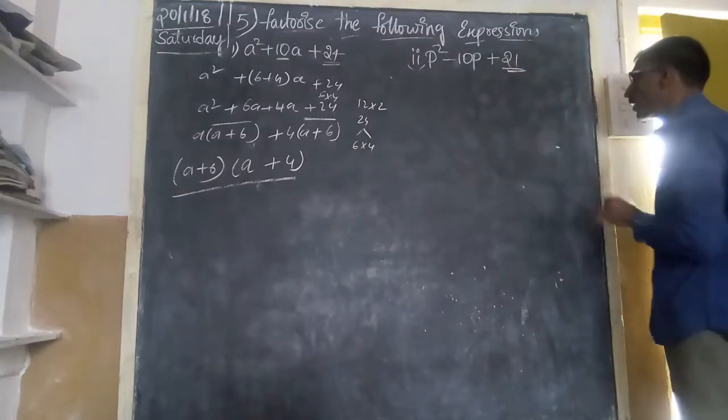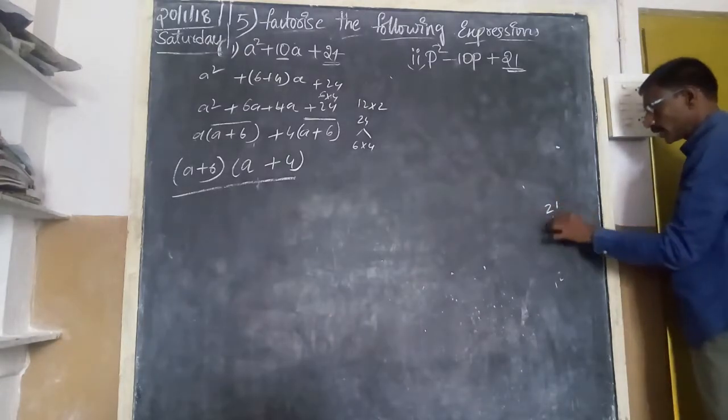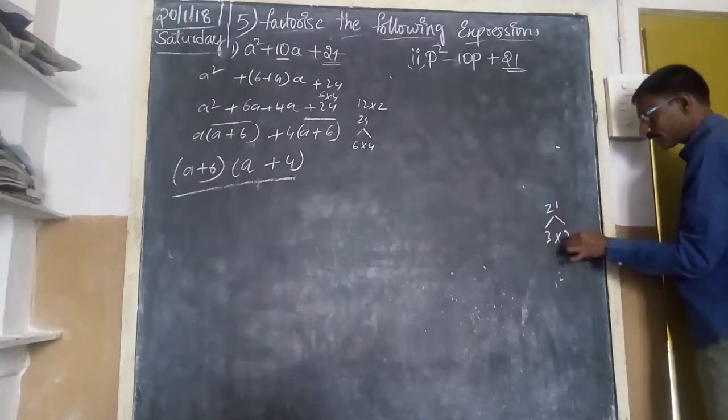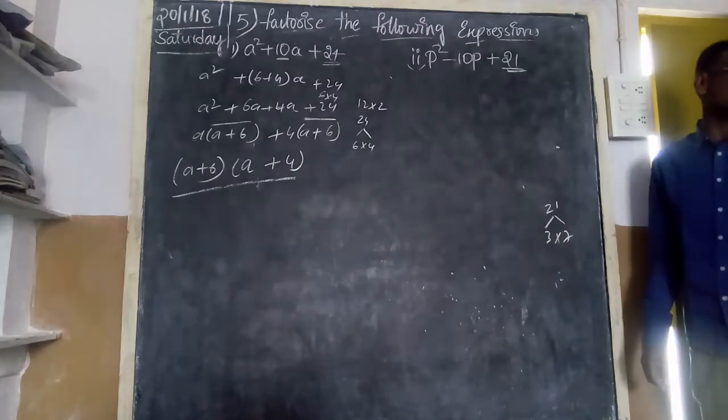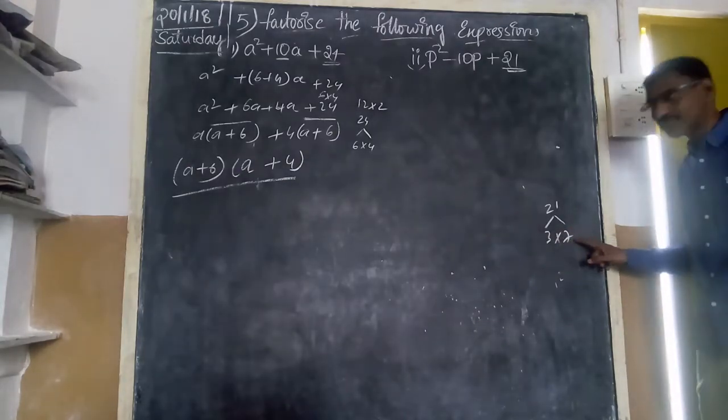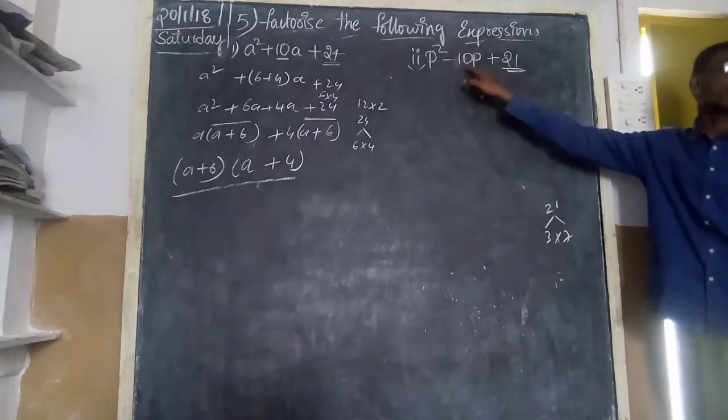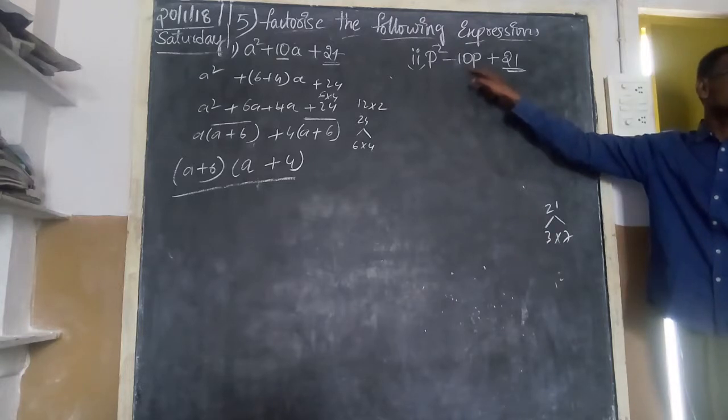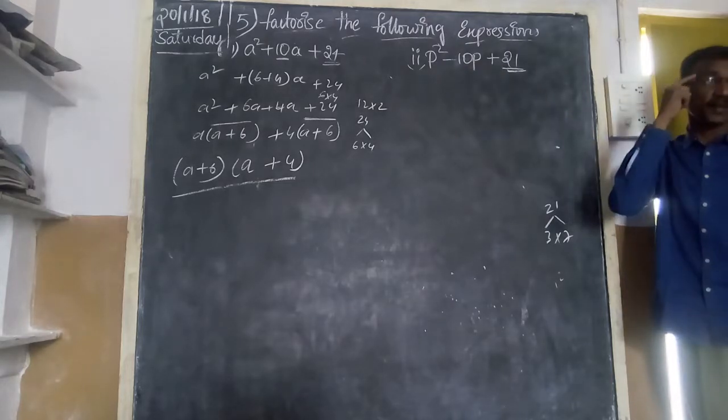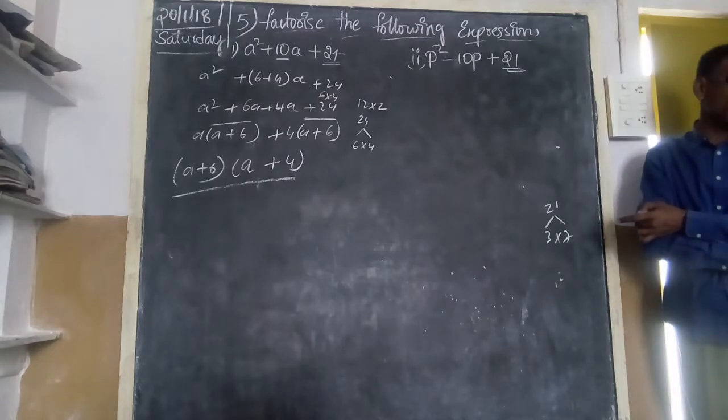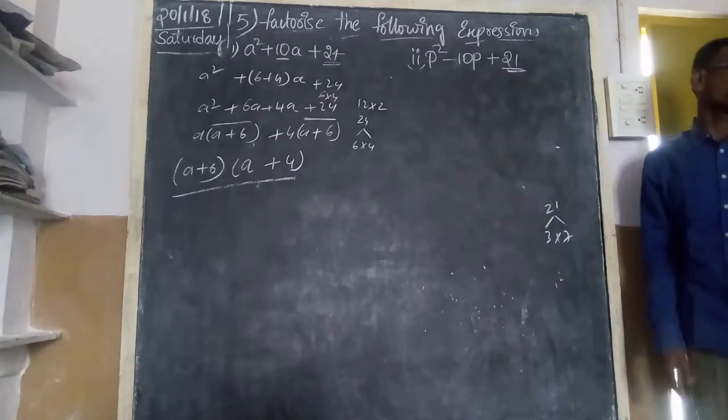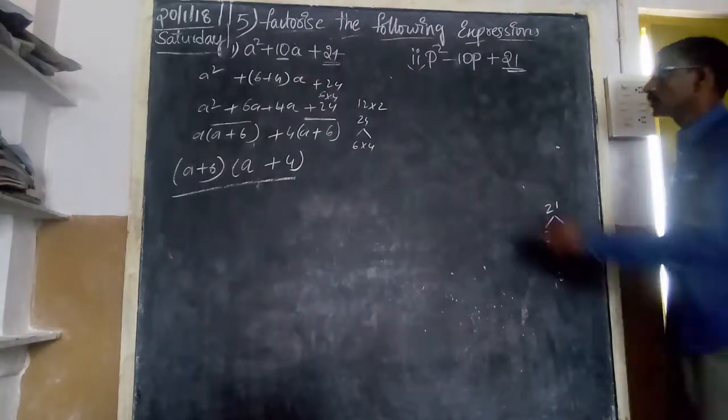Again, come to here. Take this one, the last one. What is that? 21. 7 times 3, or 3 times 7. 3 plus 7. See here. This is the first step, keep in mind. This is also called splitting of middle term to factorize the given expression. This is the first step: splitting of middle term.